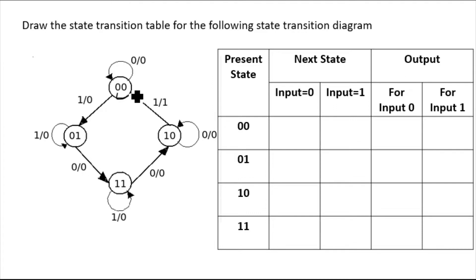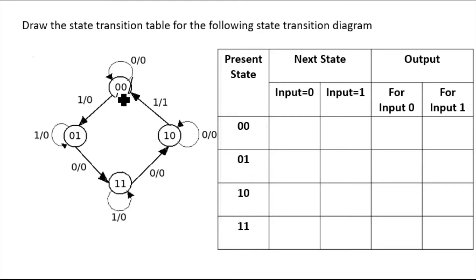This is a brief introduction about the diagram. The values inside this circle are two values: zero-zero is your present state, zero-one is your present state, one-one is your present state, and one-zero is your present state. Now these arrows — you can see many arrows in this diagram. Each present state has two outgoing arrows.